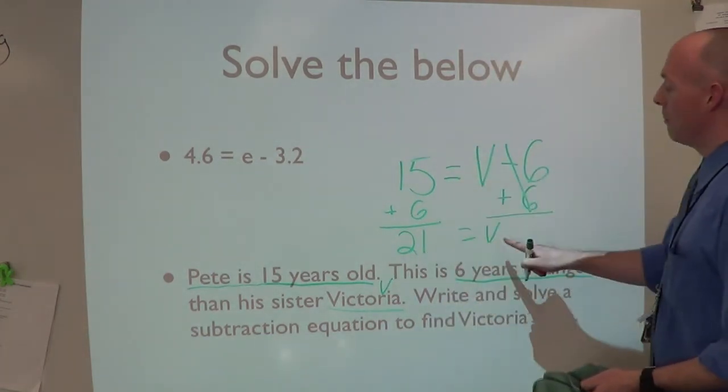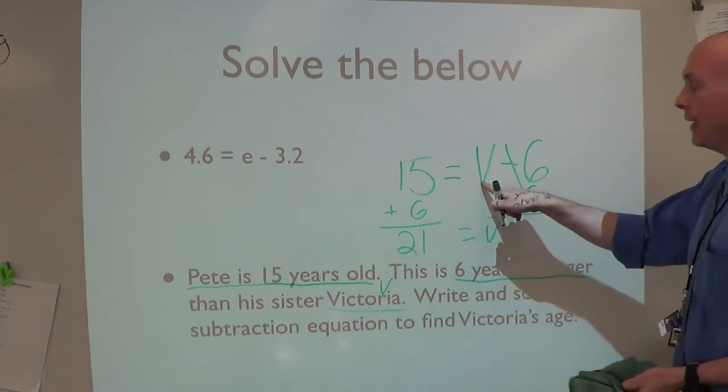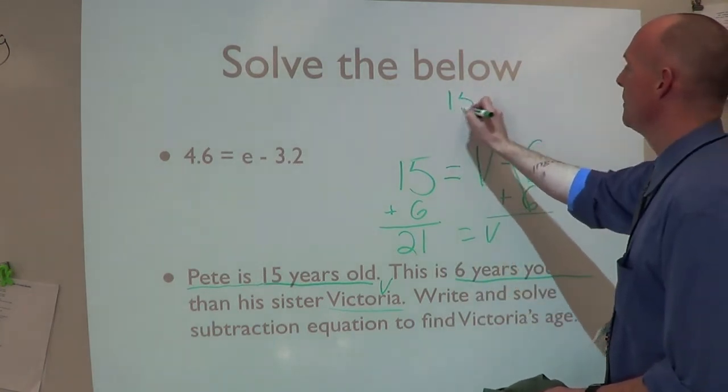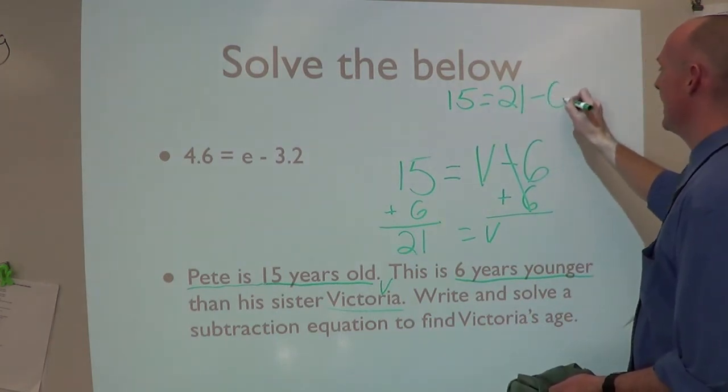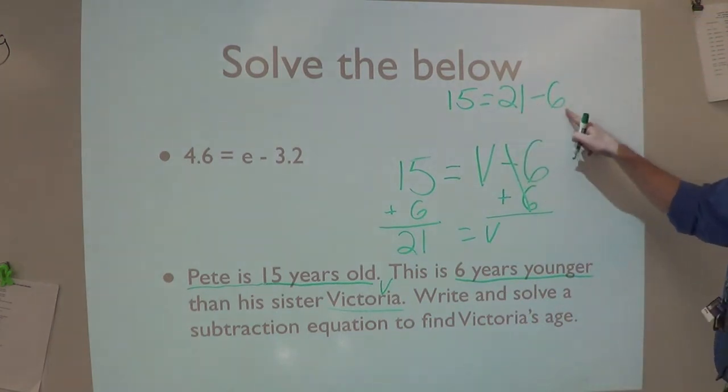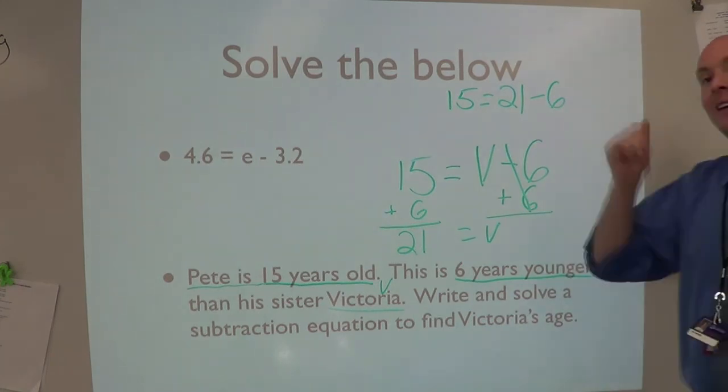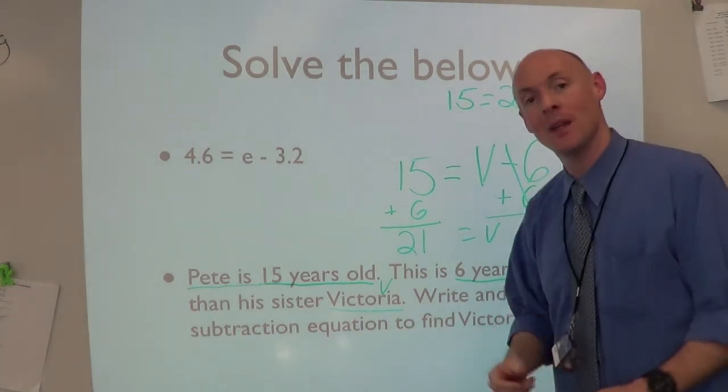I think it's correct, but let's double check. I'm going to plug 21 in for the v: 15 equals 21 minus 6. 21 minus 6 is 15. It is - we are good to go.